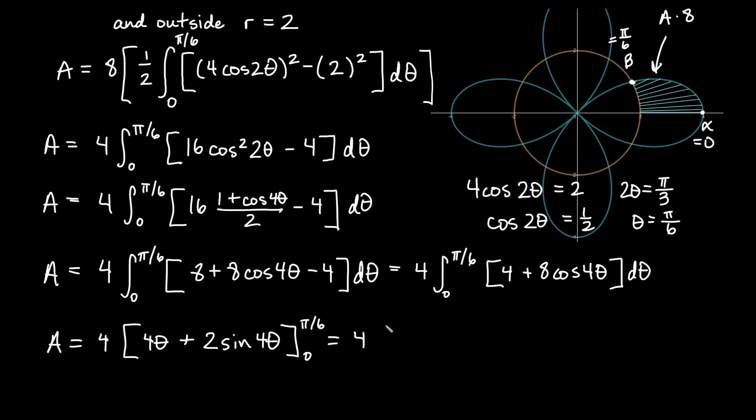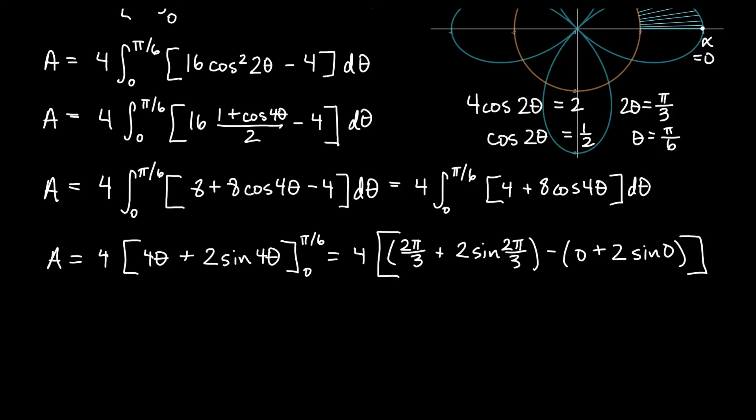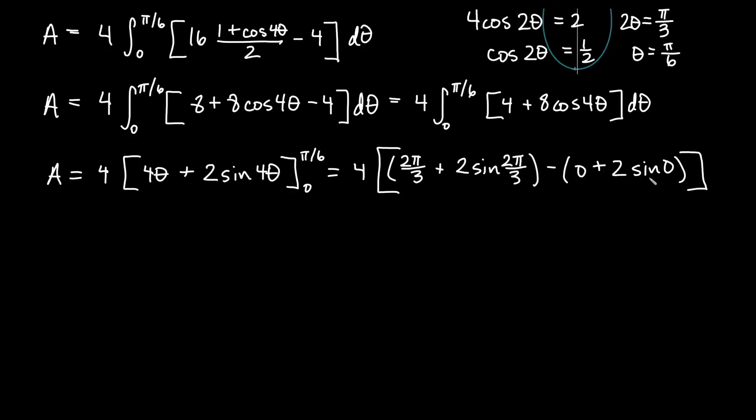And that will give us then 4 times, plugging in pi over 6, 4 times pi over 6. That would be 4 pi over 6, also known as 2 pi over 3. Plus 2 times sine of 4 pi over 6. So we'll say times sine of 2 pi over 3. That's our plugging in pi over 6. Minus then we'll get 4 times 0 would be 0 plus 2 times sine of 0. And we have a 4 in the front there. Let's go ahead and say what these things are. So I think 0 and sine of 0 are both 0. So we just need to focus on this part here.